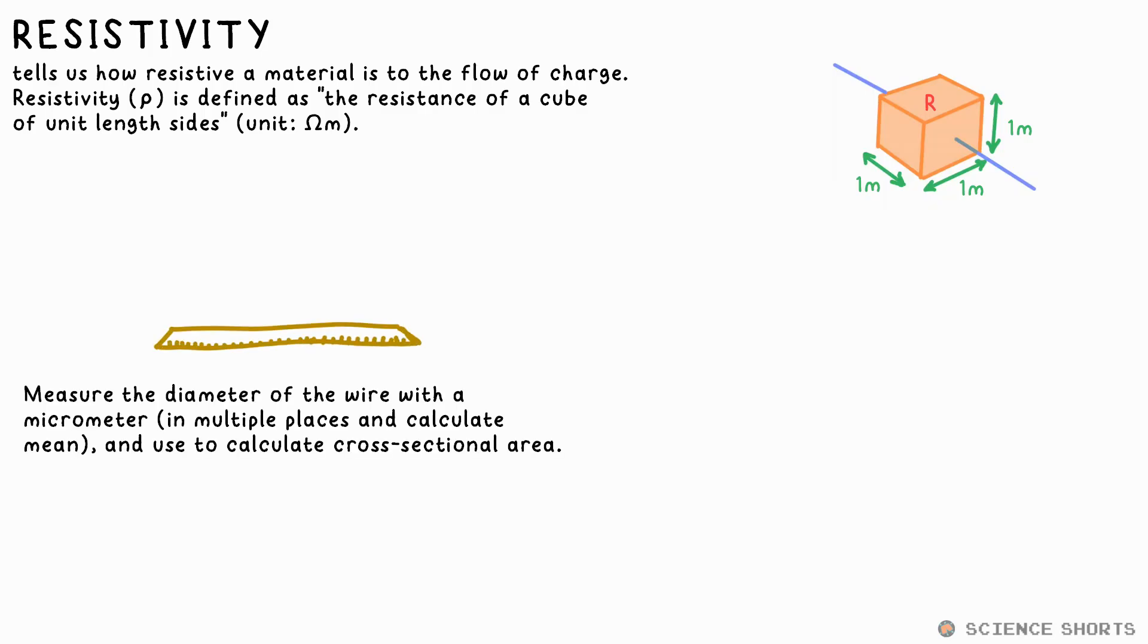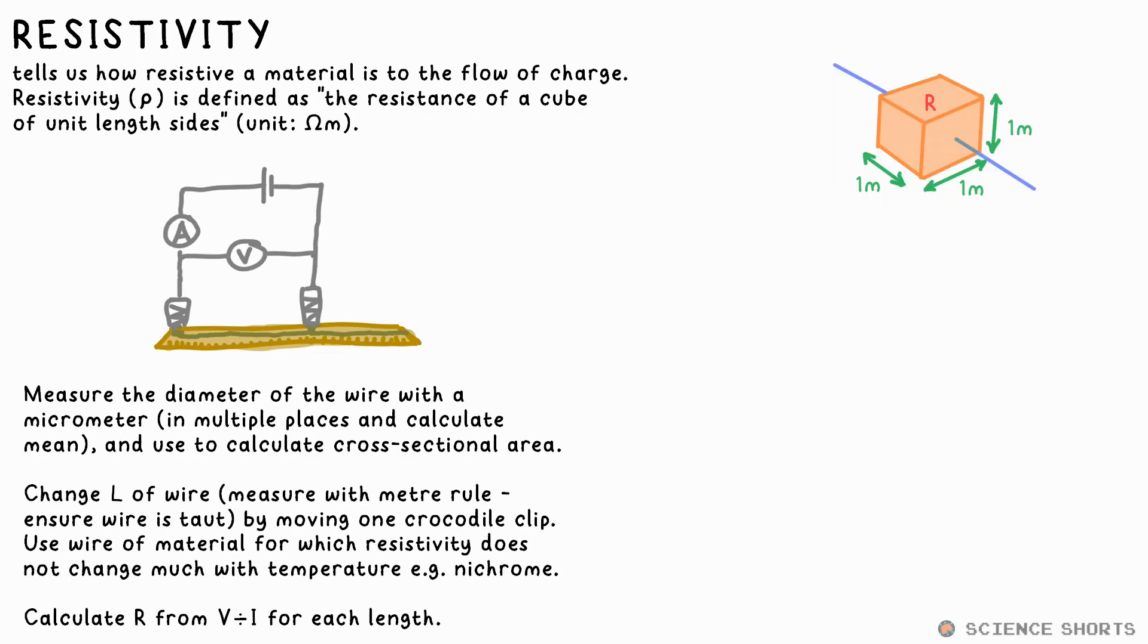To find resistivity, we measure the diameter of a wire with a micrometer, and calculate area from that using pi d squared over 4. We then measure V and I to calculate R for varying lengths of the wire measured with a meter rule. Plotting R against L gives a proportional relationship. The equation for resistivity, therefore, is this. R equals rho L over A, where rho is resistivity in ohm meters. Rearranging this, we have rho equals R A over L. The gradient of the graph is R over L, so multiplying by this area gives us the resistivity.